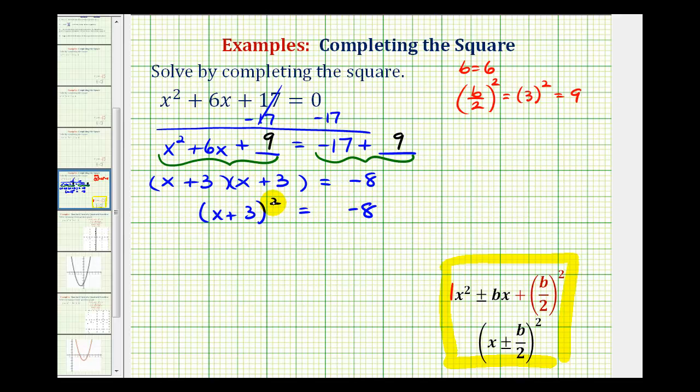And now to undo this squaring and solve for x, we'll take the square root of both sides of the equation. And remember when doing so, we're going to have a plus or minus sign here. And now when we simplify the left side, this will simplify to one factor of x plus 3. And on the right side, we need to simplify the square root of negative 8. Let's take a look at that over here.